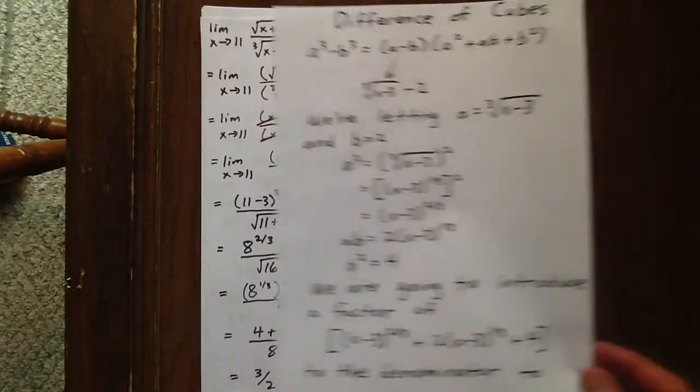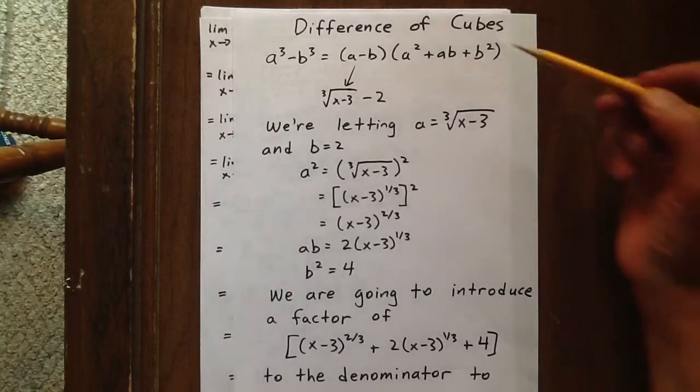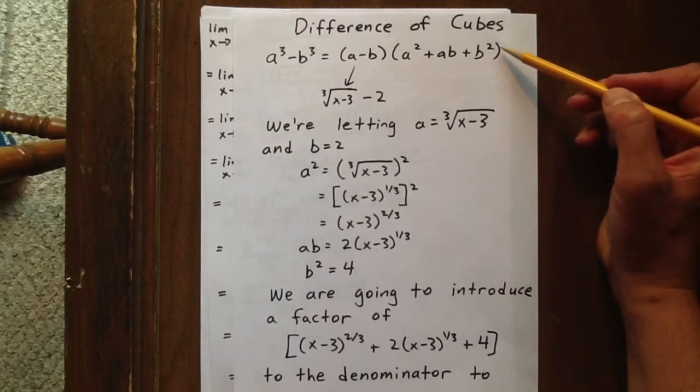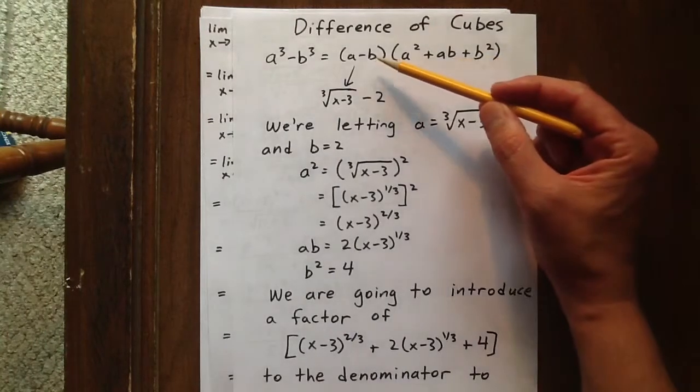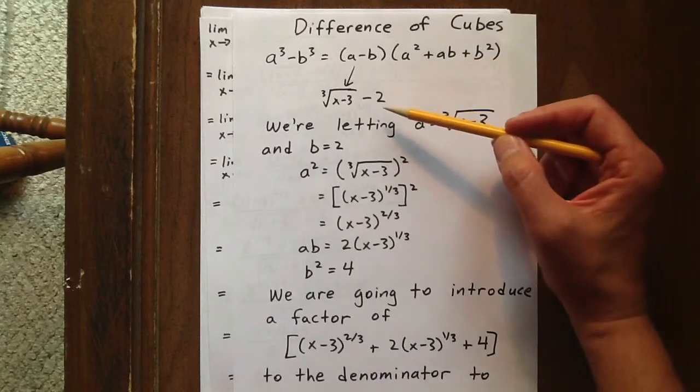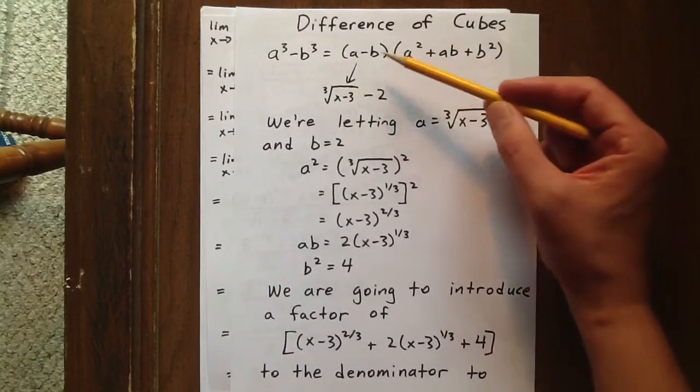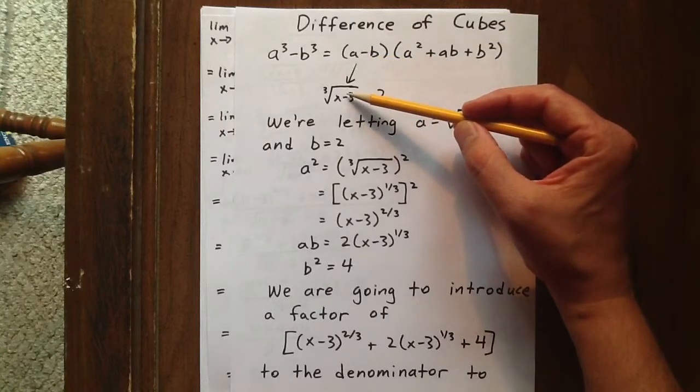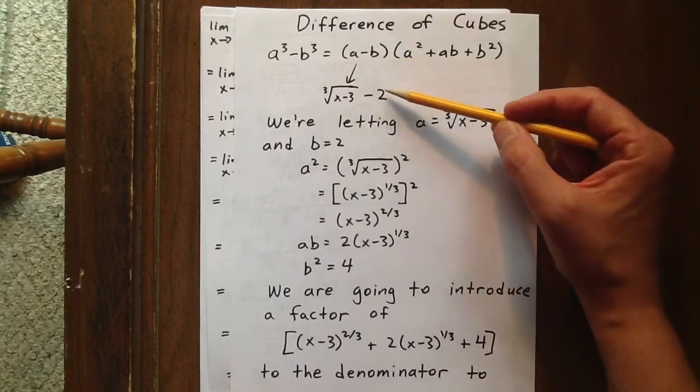So in this case, what we're going to do is recall that if a cubed minus b cubed is our expression, that equals a minus b times a squared plus ab plus b squared. We're going to let a be the cubed root of x minus 3, and we're going to let b be 2.